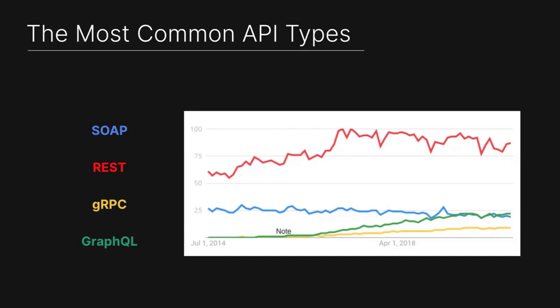Below REST, we see that SOAP, while still popular and used by many enterprises — especially those heavily invested in service bus technologies — is still around but declining.